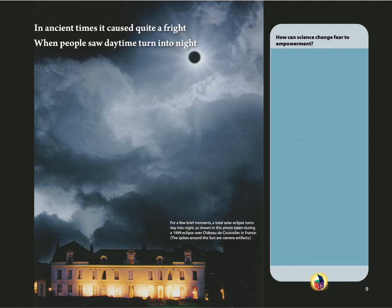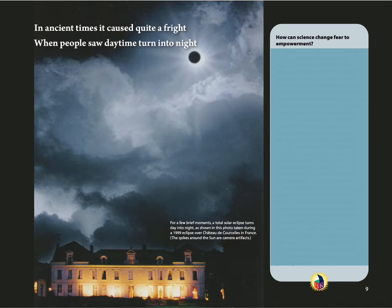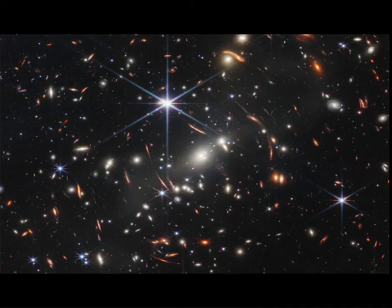We'll now resume our focus on totality. In ancient times it caused quite a fright when people saw daytime turn into night. As you can see in this photo, totality really does turn day into night, so you can imagine that if you didn't know a total solar eclipse was coming, this really would have been quite frightening. Thanks to science, we now understand eclipses fully, which means that science has turned ancient fears into empowerment that allows us to enjoy eclipses. And the same science allows us to do far more, such as to get pictures like this one from the James Webb Space Telescope showing galaxies throughout our universe.